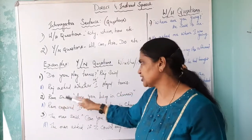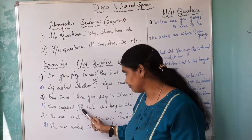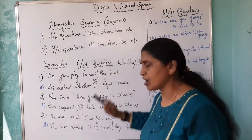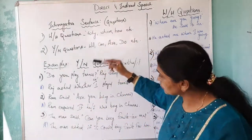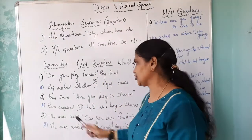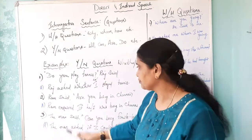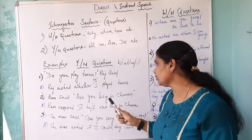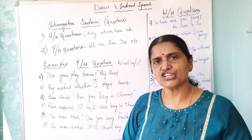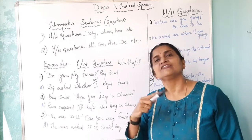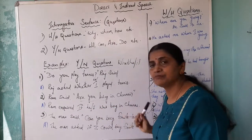Next sentence — Ram said: 'Are you living in Chennai?' So, Ram inquired. I used 'if' here, because you can use either 'whether' or 'if.' 'Are you living' is present continuous tense. When we change it to indirect speech, the present continuous is changed into past continuous tense. So: 'Ram inquired if he was living in Chennai.'